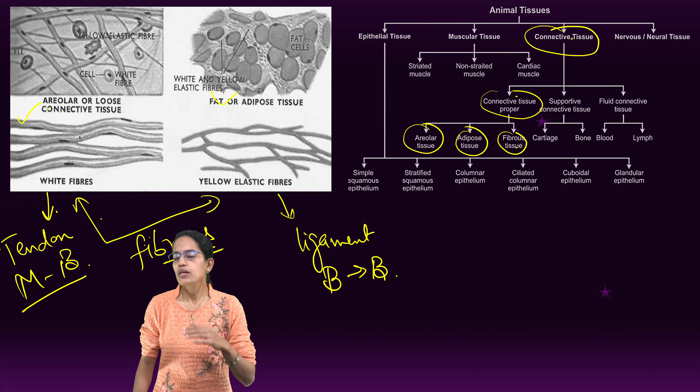Next is areolar tissue — the most commonly distributed tissue in the body. These are star-shaped cells also called fibroblasts. One version is mast cells, which respond to allergic reactions. Areolar tissues are also responsible for responding to mechanical injury. They are found in the kidneys and below the skin. Key functions include response to allergic reactions and production of heparin.